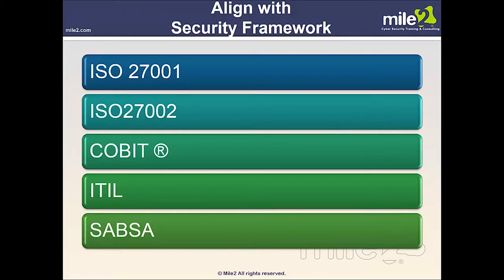We can align with different security frameworks. ISO 27001 is a family of standards that helps an organization keep information assets secure — including financial information, intellectual property, employee details, and third-party information. ISO 27001 covers information technology security techniques and the information security management system. It formally specifies a suite of activities concerning the management of information security risk.